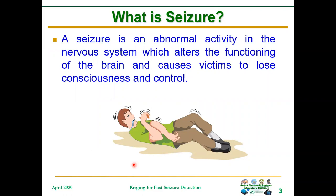You think about them and then they happen. There are also involuntary actions — actions you do not premeditate, actions you do not know are going to happen. They are also triggered from the brain, but these are abnormal triggers. These are the kinds of actions that result in seizure. Therefore, a seizure is an abnormal activity in the nervous system which alters the functioning of the brain and causes the victim to lose control and consciousness.